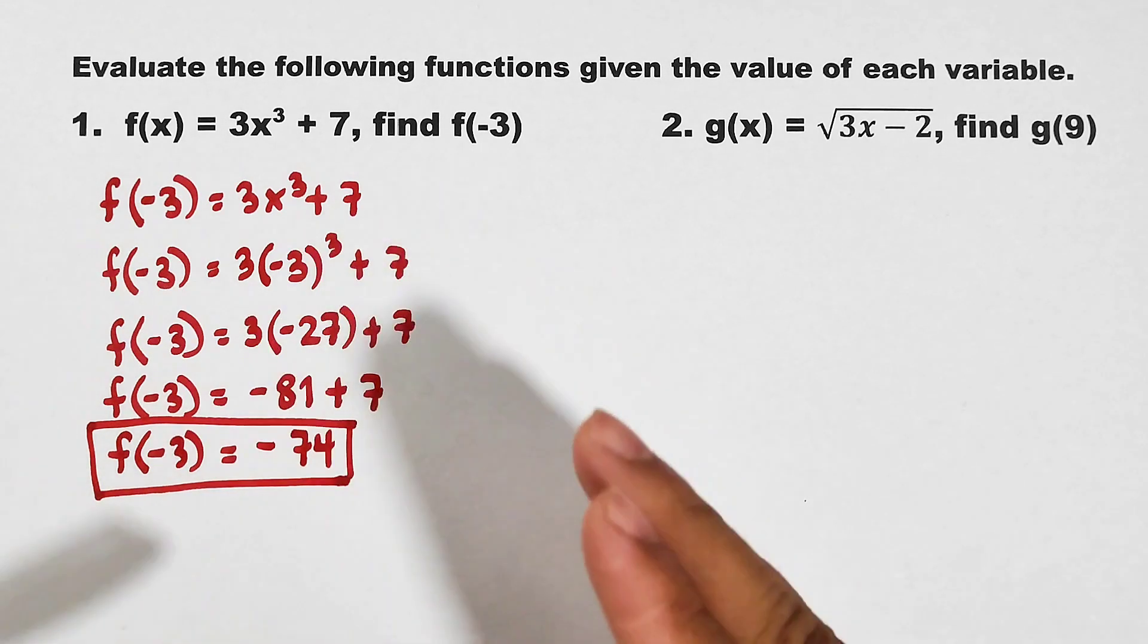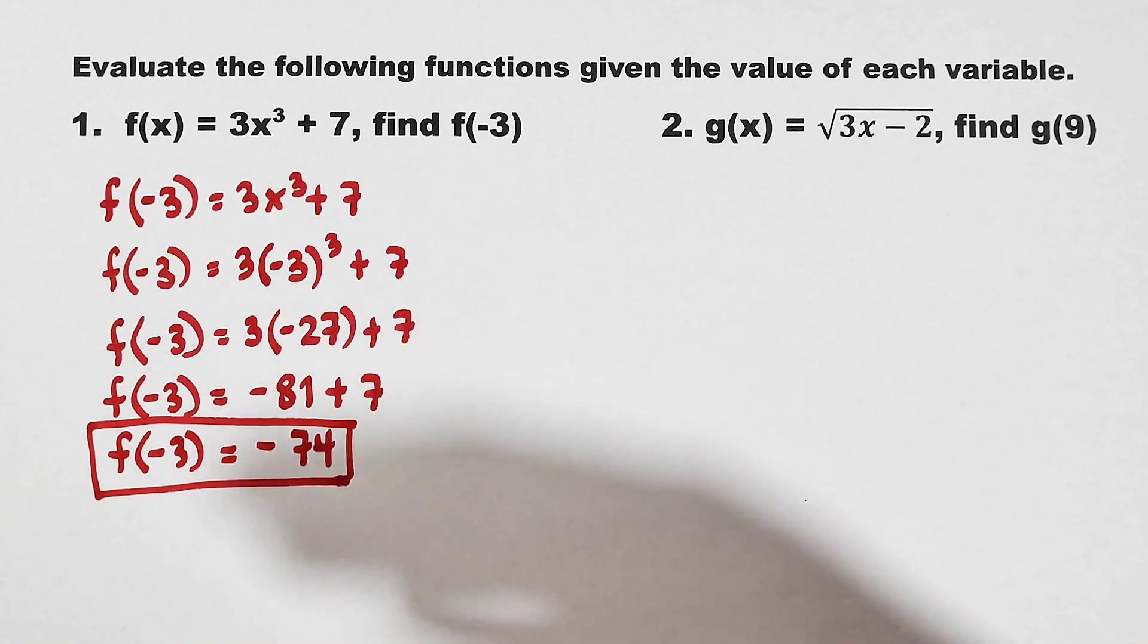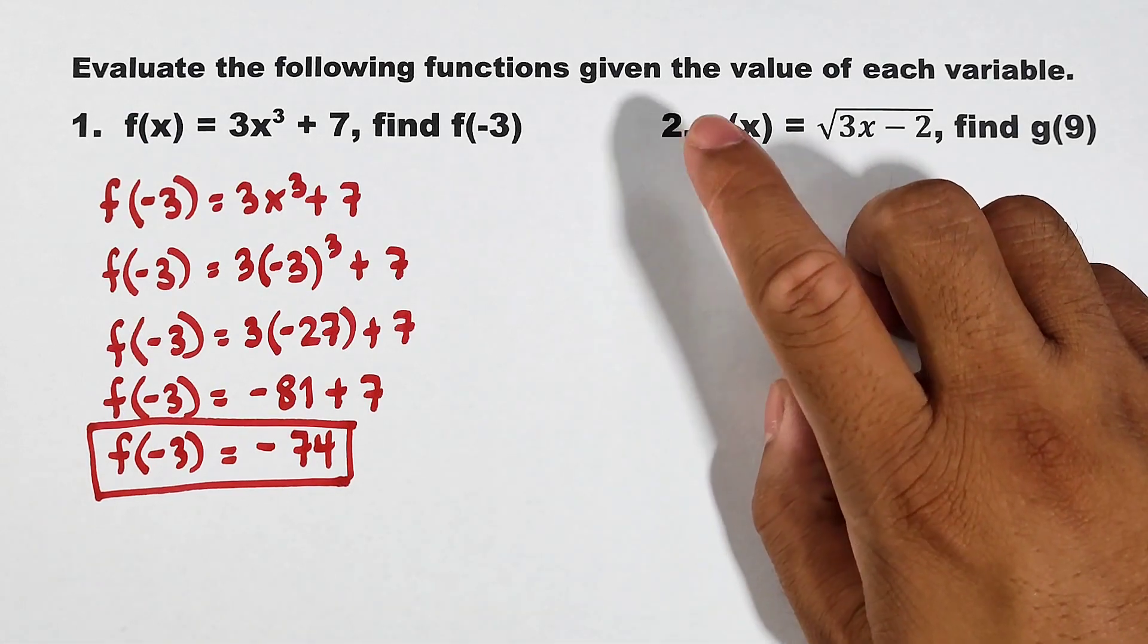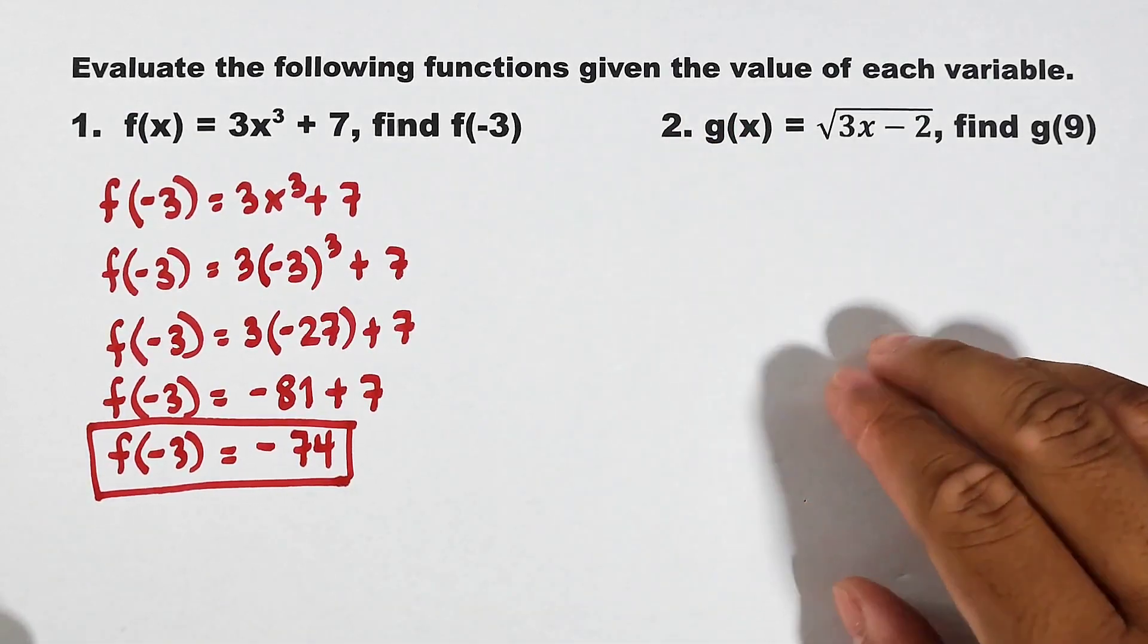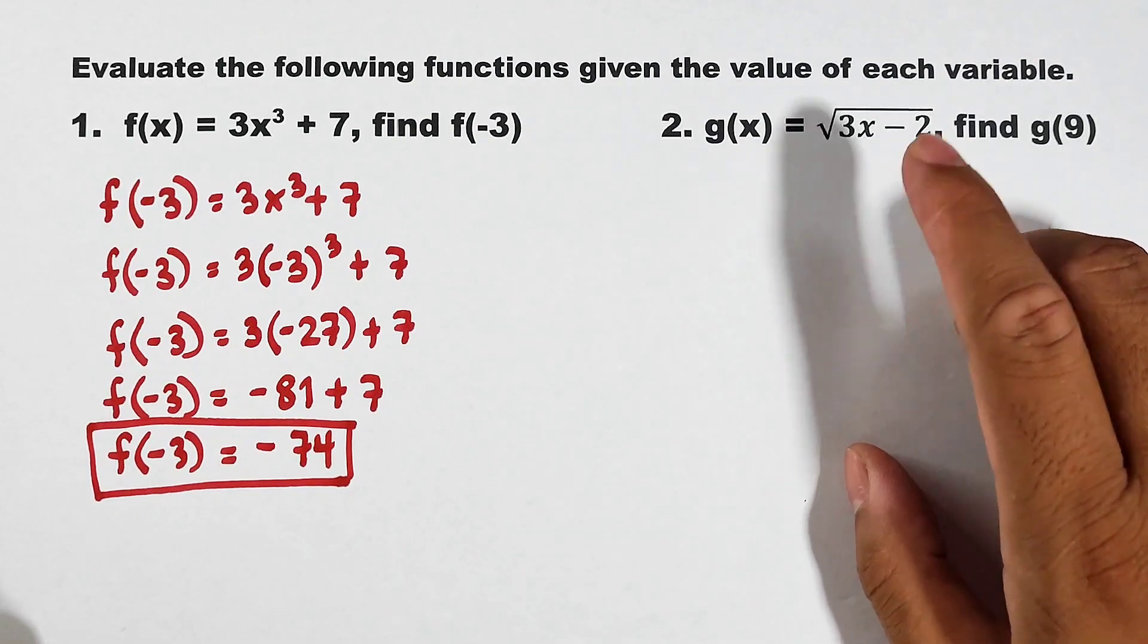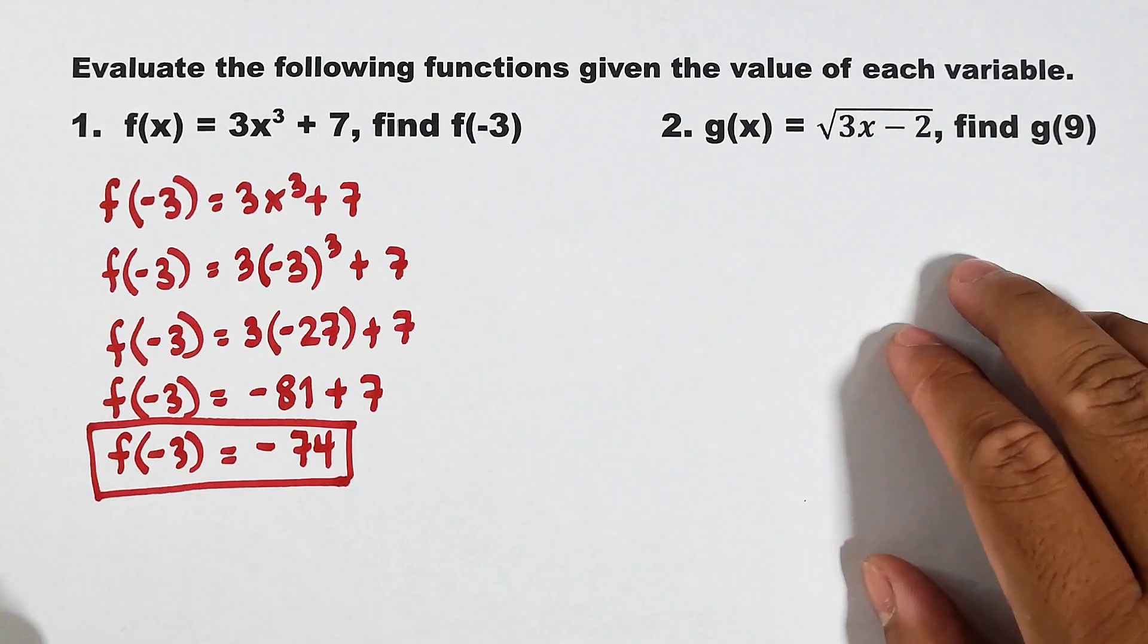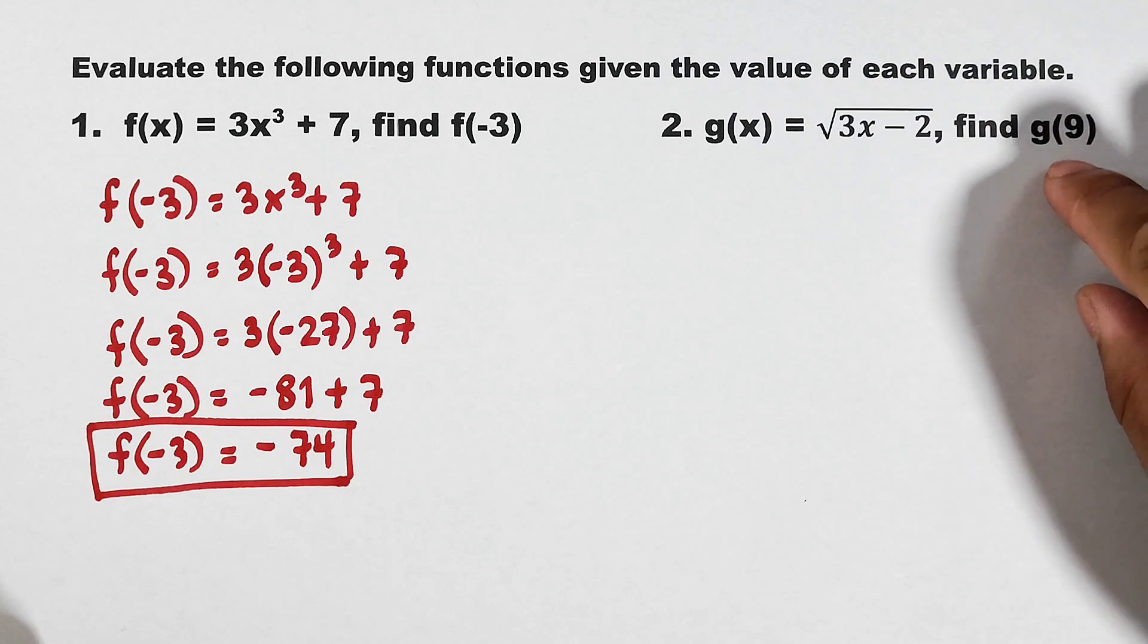So I hope, guys, in our first example, nakuha nyo na yung mismong concept on how to evaluate function. In your early algebra, evaluating function is somehow parehas sya ng evaluating algebra expressions. Now, let's move on with number 2. For number 2, we are given another function, function g. So we have g of x is equal to the square root of 3x minus 2. So here, don't worry about radical. And we are asked, find g of 9.